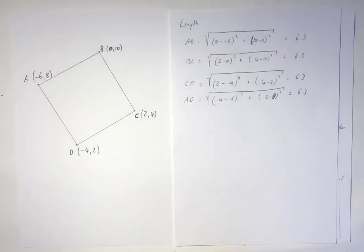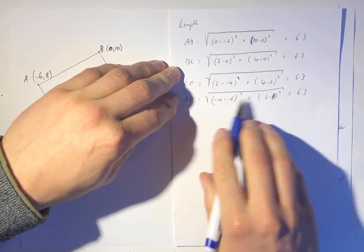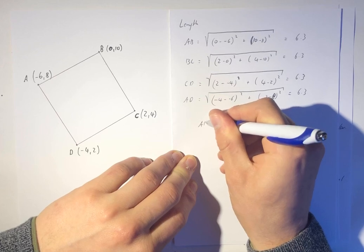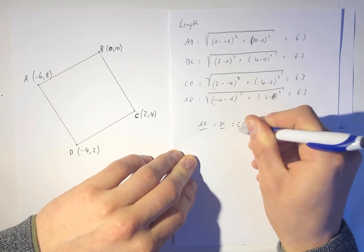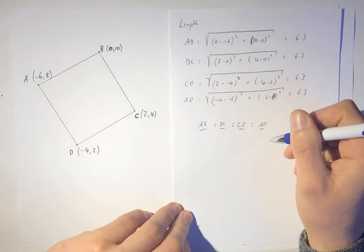So I didn't actually need a calculator really, apart from doing the first one, because then the inside always became 40, didn't it? So AB equals BC equals CD equals AD. Nice.